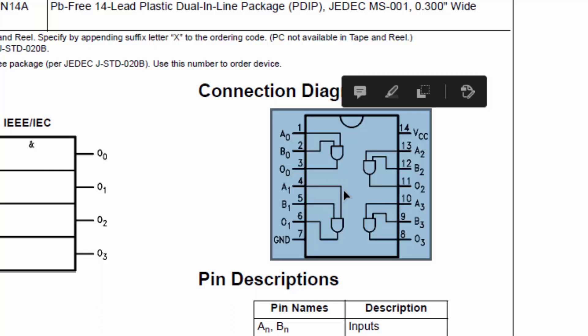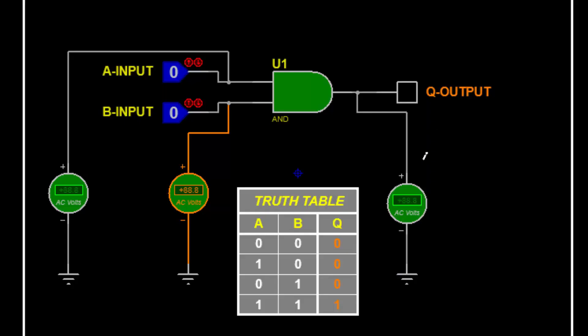We have four gates and all gates are independent from each other. To understand its function, we have to consider this truth table. This is input A, input B, and here we have Q output. 0 means that is not 0 volt, that is a logic level.